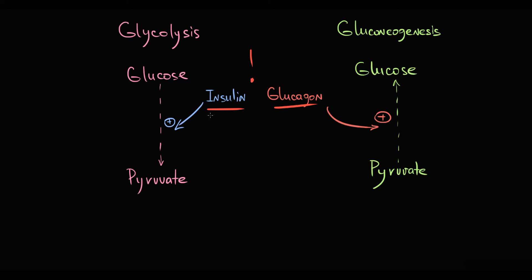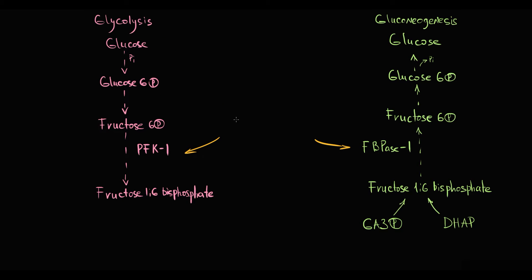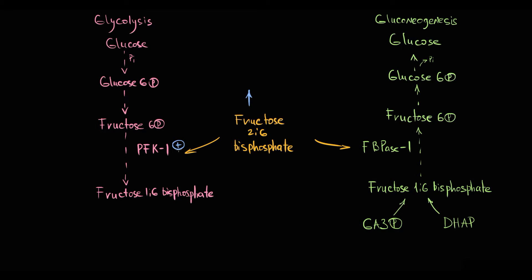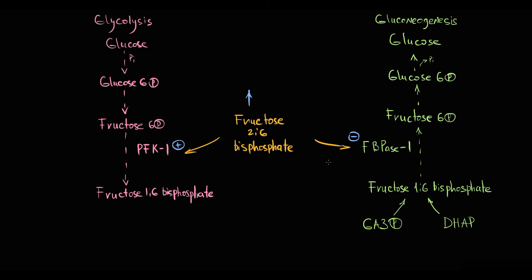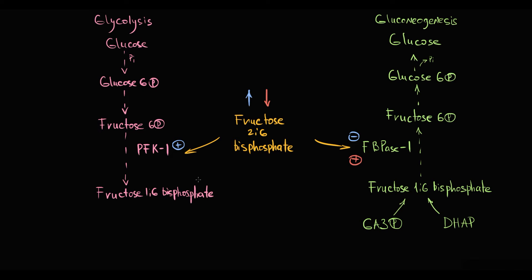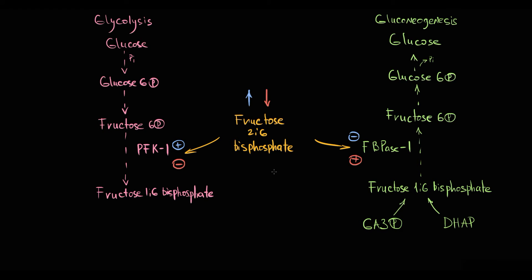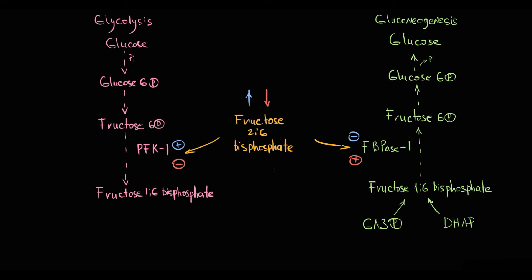So how are these processes regulated? The concept is that the activity of PFK1 as well as FBPase1 is regulated by fructose-2,6-bisphosphate level. High fructose-2,6-bisphosphate levels stimulate PFK1, thereby increasing glycolysis, and simultaneously high fructose-2,6-bisphosphate level inhibits FBPase1, thereby inhibiting gluconeogenesis. And vice versa — low fructose-2,6-bisphosphate levels stimulate FBPase1, thereby stimulating gluconeogenesis, and simultaneously inhibit the activity of PFK1, thereby inhibiting glycolysis.